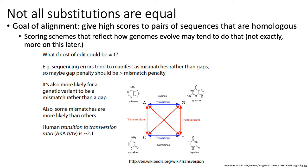Similarly, in terms of genetic variation across populations like humans, you tend to get substitutions — what look like mismatches in your alignment — rather than indels, which produce gaps. So real-world alignment scoring schemes tend to penalize the introduction of gaps more than mismatches in an alignment.